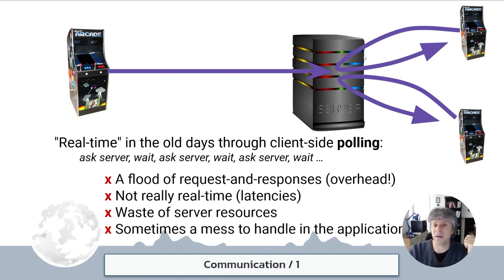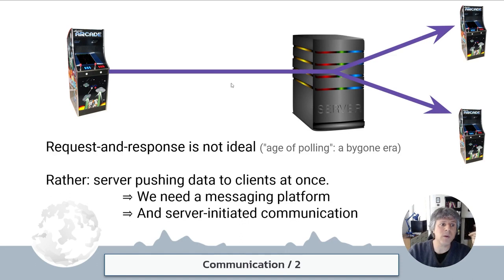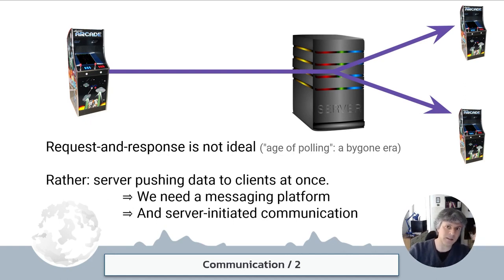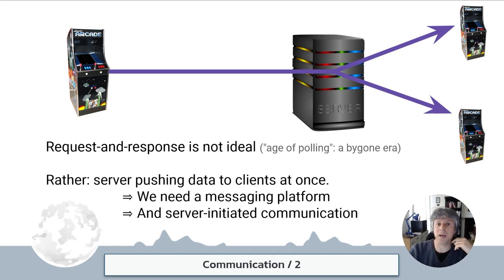Instead of clients constantly and actively asking, we want something better. We want that every time a new player position update gets to the server, the server actively broadcasts this information out to all connected clients. So instead of request-response client-initiated communication, we want something starting from the server that actively pushes data. That means we want a messaging platform — a platform that acts as a relay for messages in as real-time a fashion as possible. This is what is called push instead of pull.